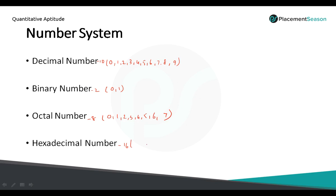Similarly, in hexadecimal we have 16 different symbols that start from 0 up to 9, and then we have A, B, C, D, E and F. So totally 16 different symbols are used to represent any hexadecimal number. That is called base — base means that many different symbols we are having to represent the given number. 2, 8 and 16 are the base values of binary, octal and hexadecimal.